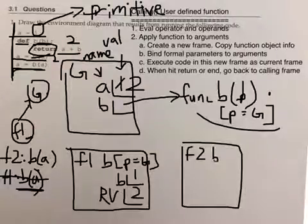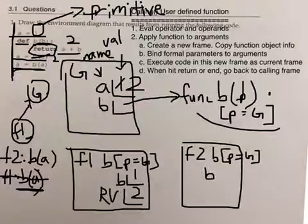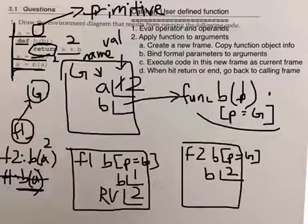Copy the information from the object. B parent is global. The formal parameter B is bound to the argument A, which evaluates to 2. So B is 2. Now we return A plus B. A can be found not in frame 1, but the global—sorry. So now we created a new frame.